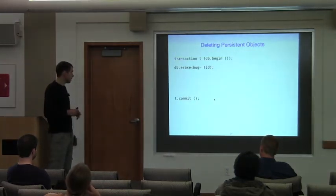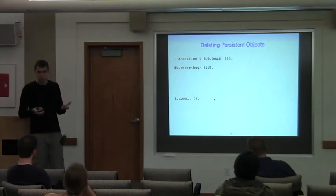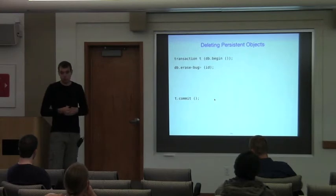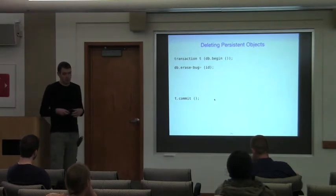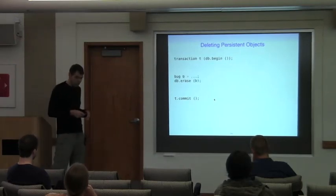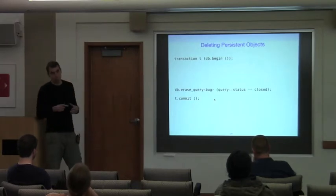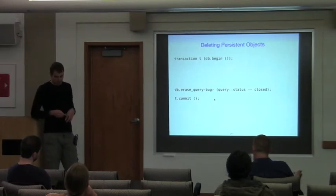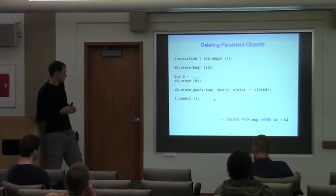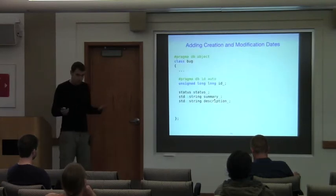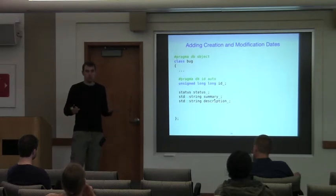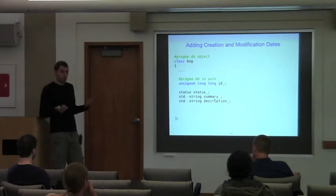The last operation we haven't covered is deleting persistent objects from the database. You can do it by passing the bug ID — again, the ID works as a proxy for the object in many cases — or we can pass the object itself, or use a query condition to delete multiple objects, for example deleting all closed bugs from our database. That's the DELETE statement executed for the first two options.